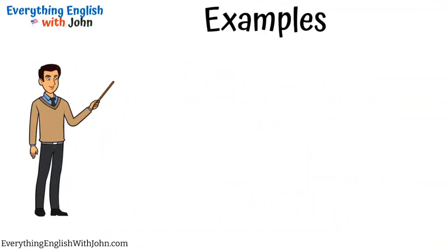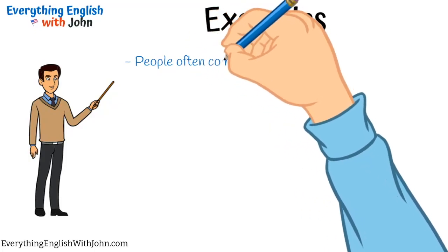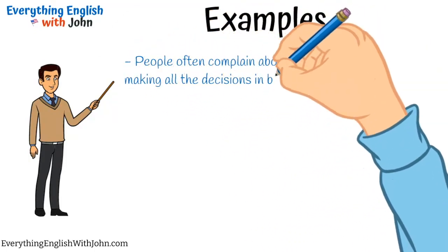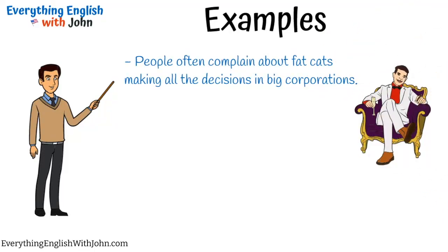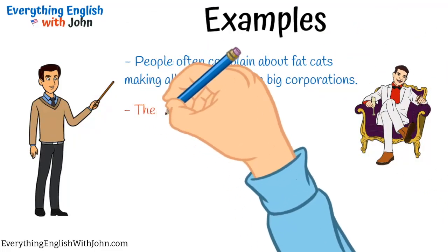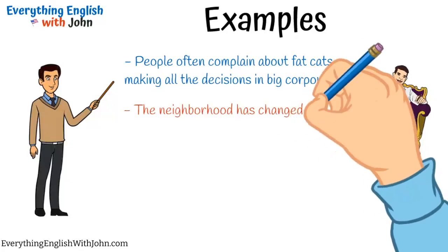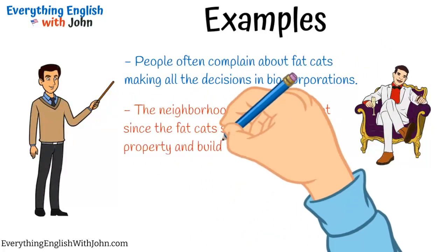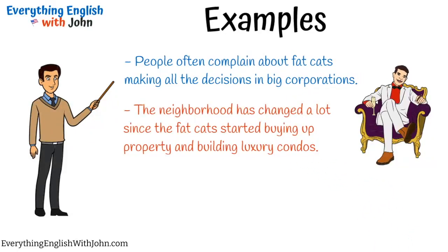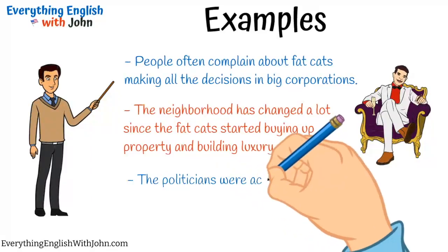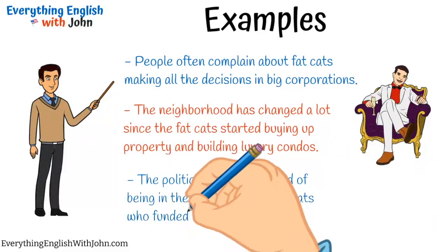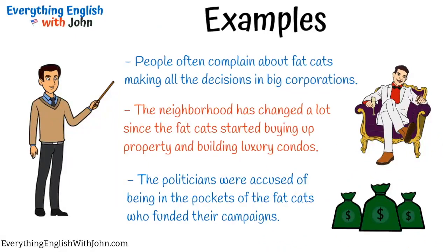Examples: People often complain about fat cats making all the decisions in big corporations. The neighborhood has changed a lot since the fat cats started buying up property and building luxury condos. The politicians were accused of being in the pockets of the fat cats who funded their campaigns.